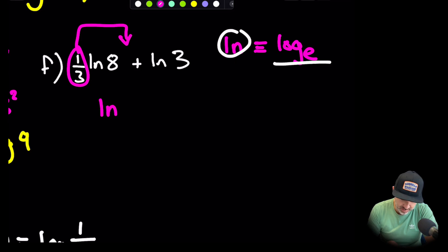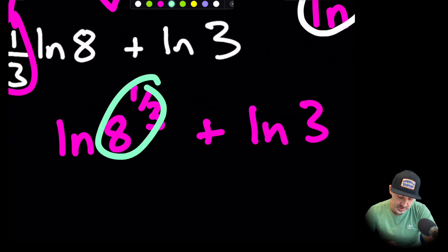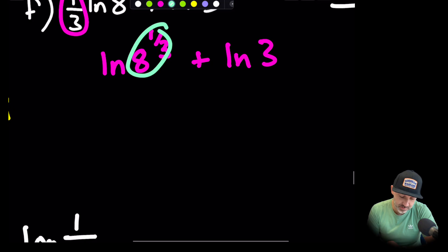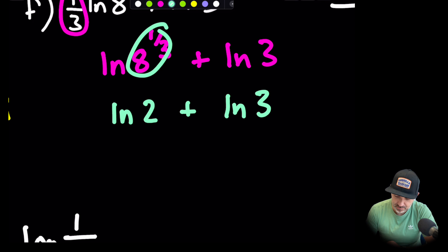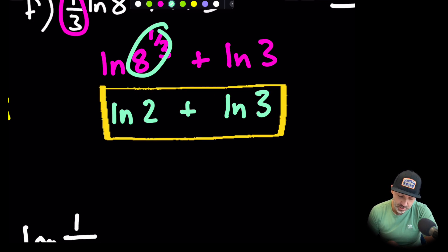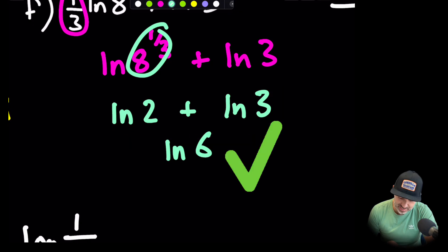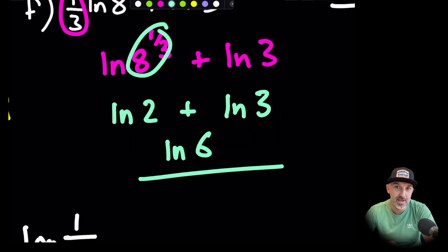If we bring the third up plus natural log 3, then this expression here is actually the cube root of 8. So this is the law of indices. The cube root of 8 is 2, and then we have plus this. Then we can use the addition rule, which is the multiplication of those two. So that will become natural log 6 and that is the end of f.